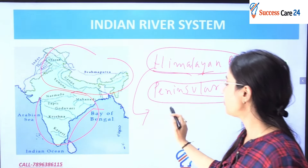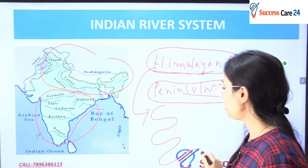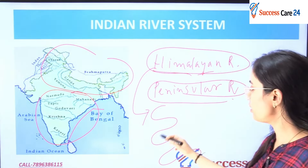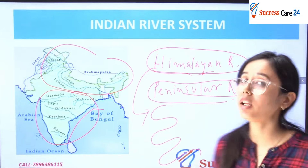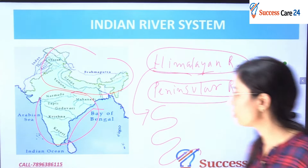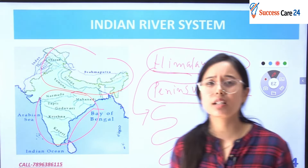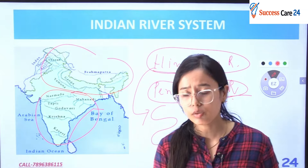The second difference is that Himalayan rivers meander a lot — they wind and curve like this. But Peninsular rivers do not meander as much.